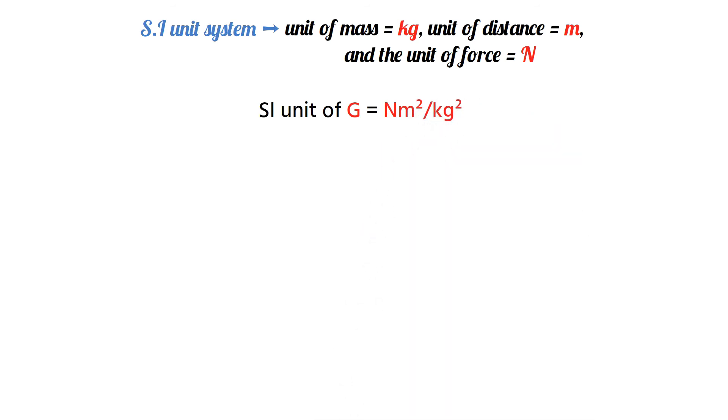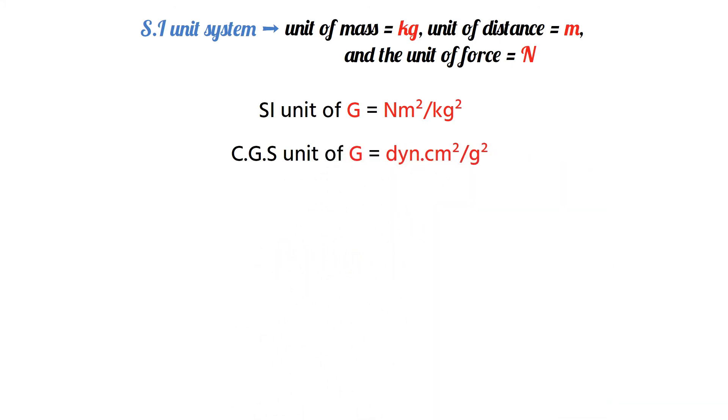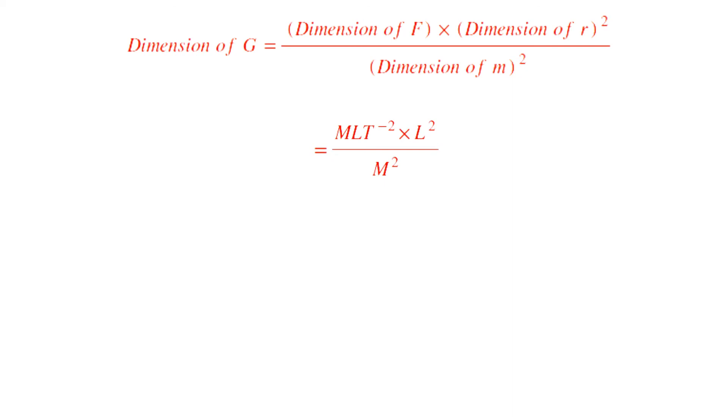Similarly, we can write the CGS unit of G as dyne centimeter square per gram square. Again using equation number 3, we can write the dimension of G equals dimension of F into dimension of R square divided by dimension of M square. That is MLT minus 2 into L square divided by M square, or M inverse L cube T minus 2.